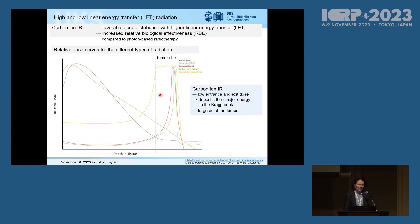It gives me great pleasure to welcome Dr. Claudia Roubaix. She is a radiation oncologist at Saarland University, Germany. She is also a member of the ICRP Committee 3. Thank you for your kind introduction and for the opportunity to present the experimental data of our lab. Carbon ionizing radiation has a favorable dose distribution with a higher linear energy transfer and an increased relative biological effectiveness compared to photon-based radiotherapy. You can see in the relative dose curves that for carbon ions, the green line, you have a low entrance and low exit dose, and the majority of energy is deposited in the Bragg peak, which can be targeted to the tumor.